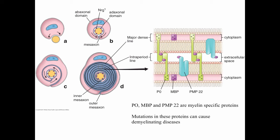Mutations in the genes that code for some of these myelin-specific proteins can be very significant in causing demyelinating diseases. People often talk about the major dense line and the intraperiod line within the myelin sheath, and this diagram is a really good way to visualize this.